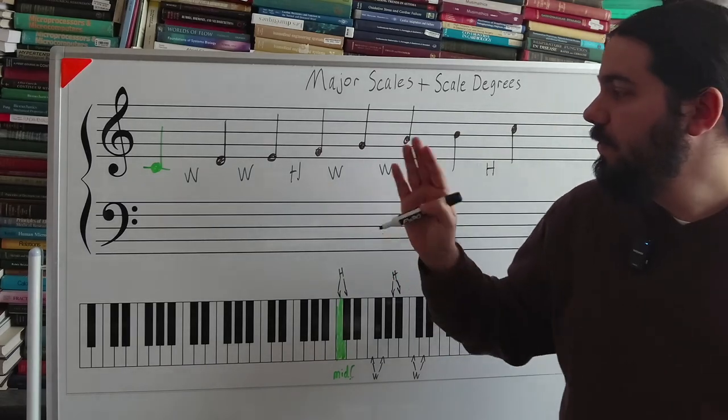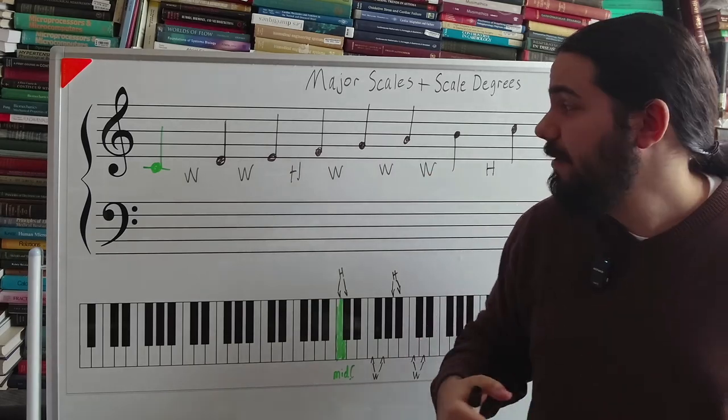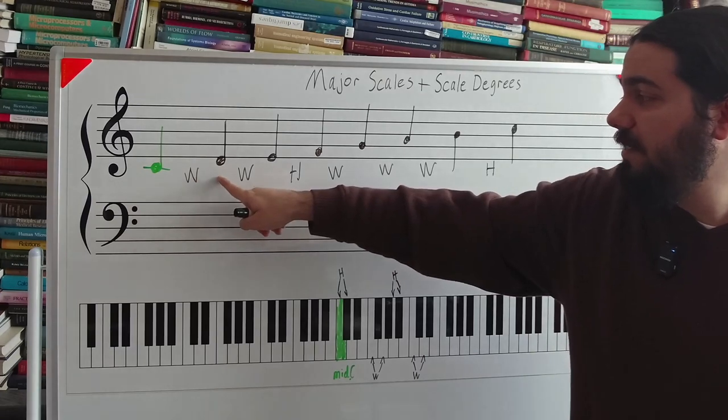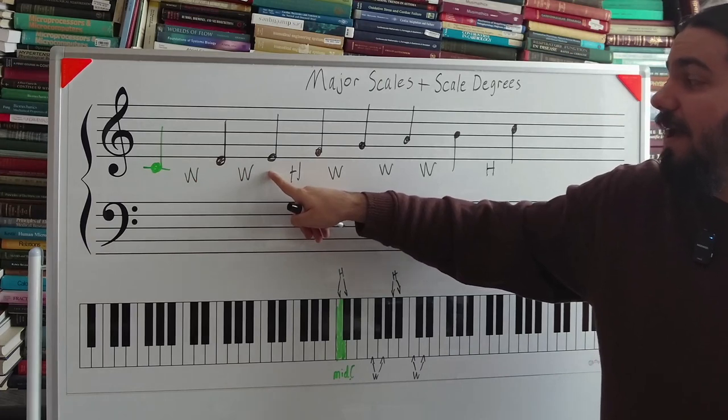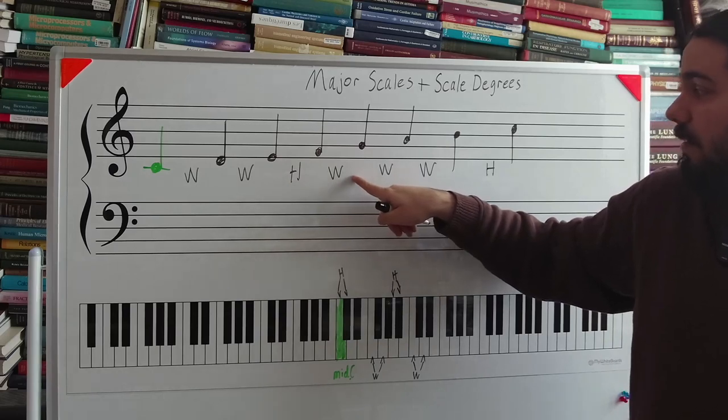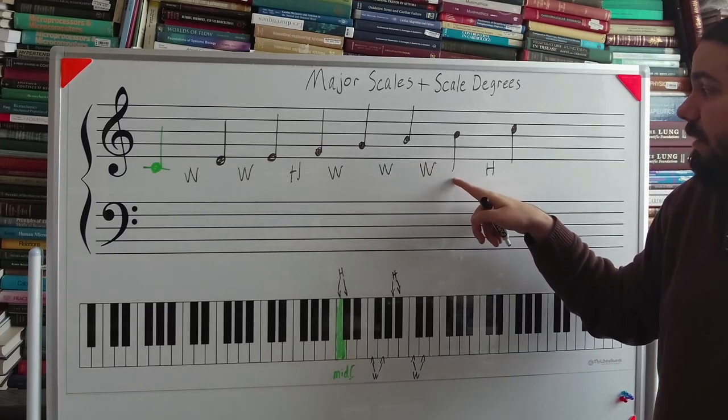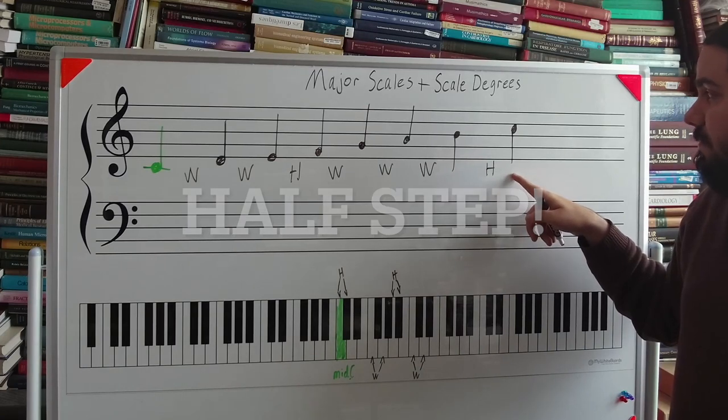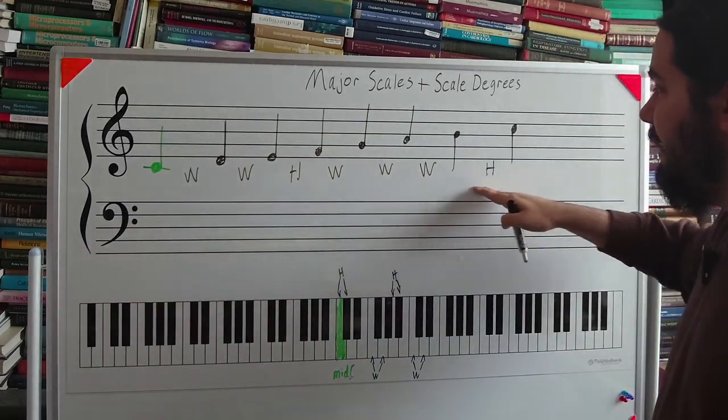So now I'm going to say out the whole step half step pattern while playing the notes on the keyboard. So from C, whole step up to D. Whole step up to E. Half step up to F. Whole step up to G. Whole step up to A. Whole step up to B. Whole step up to C. It's pretty simple. I'm going to keep this pattern here.